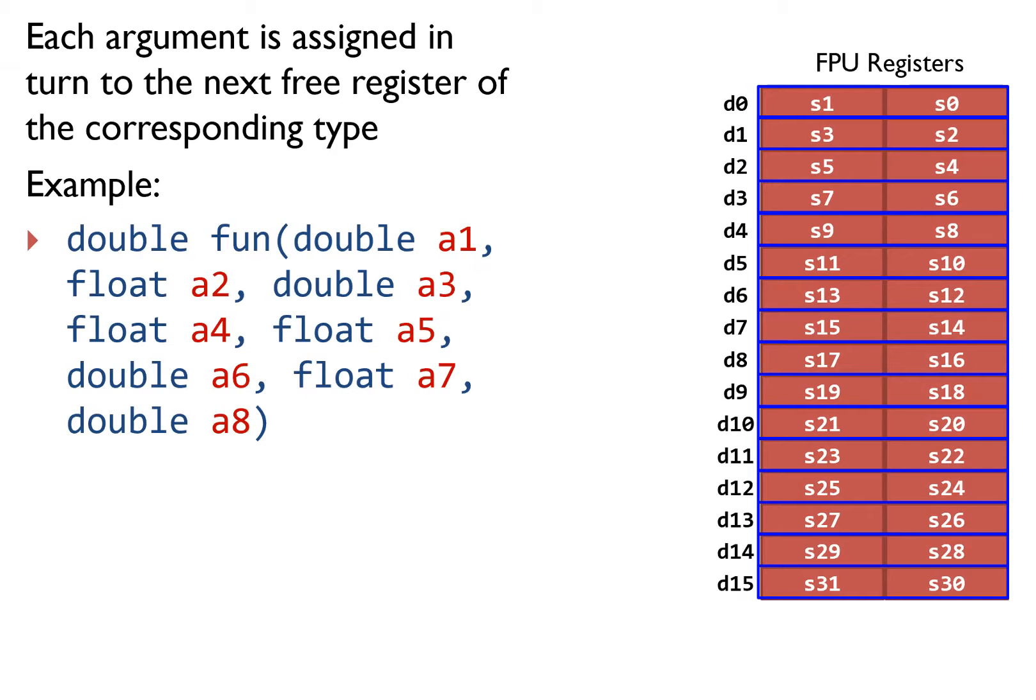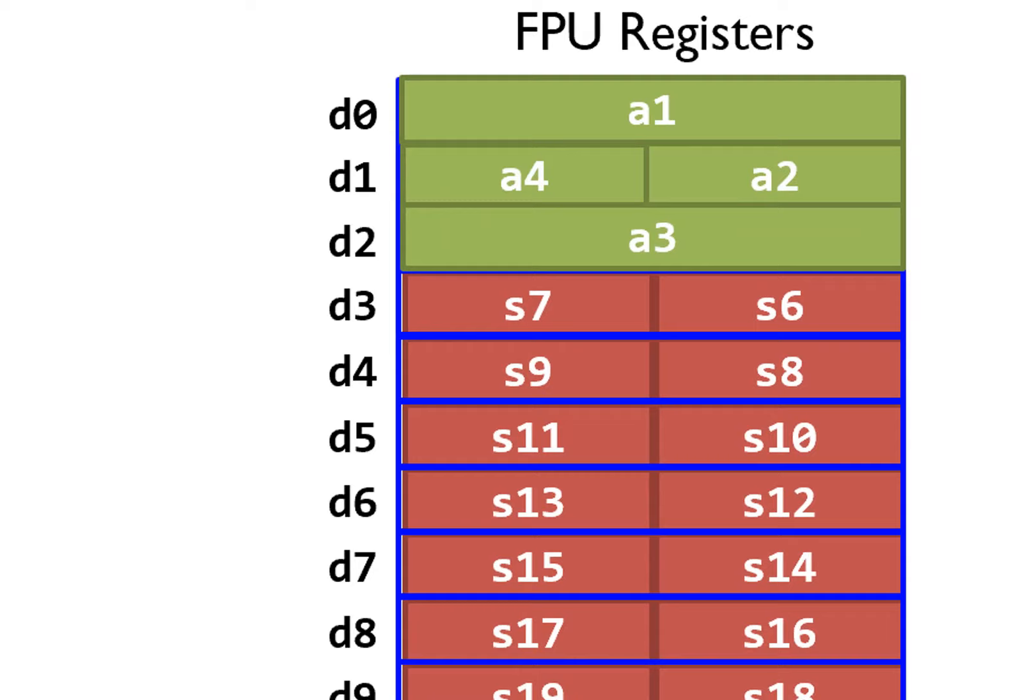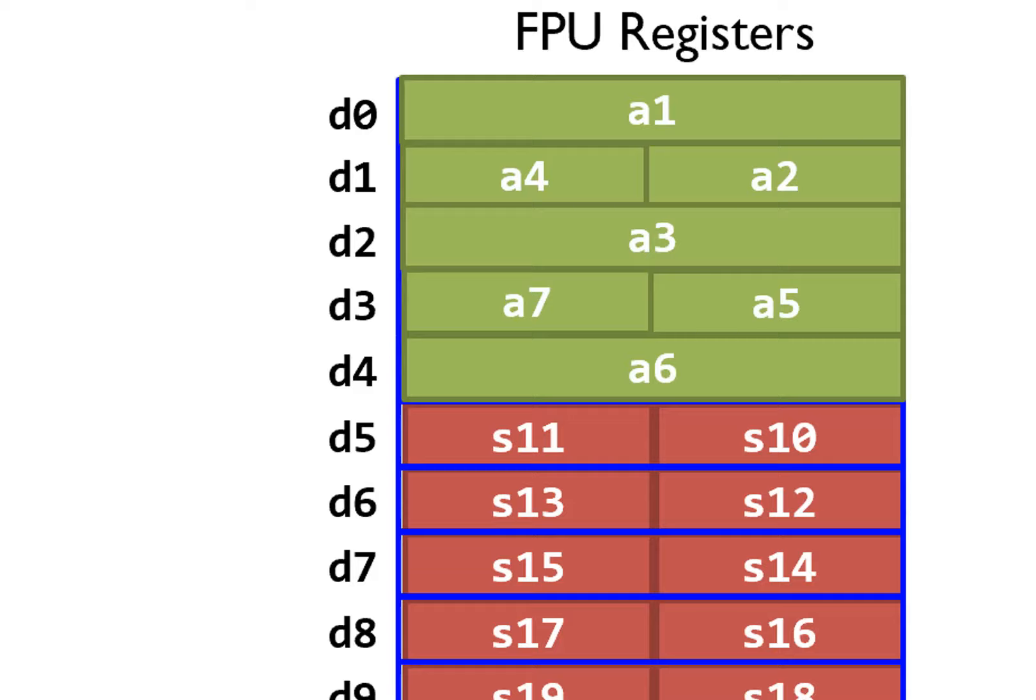The first argument A1 is a double and is passed via register D0. The second argument A2 is a float and is passed in register S2. The next argument A3 is a double and the next double precision register available is D2. Therefore, A3 is passed in register D2. Following this process, the rest arguments are passed in this way: A4 in S3, A5 in S6, A6 in D4, A7 in S7, and A8 in D5.